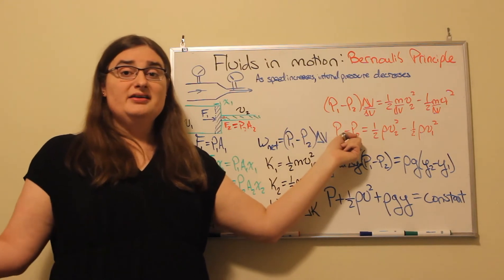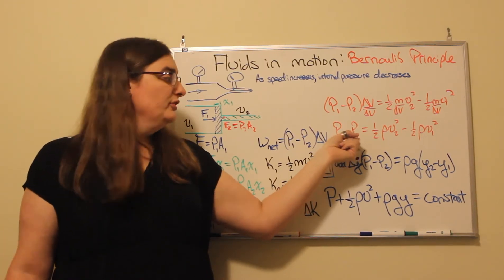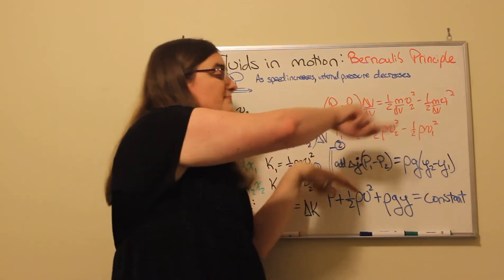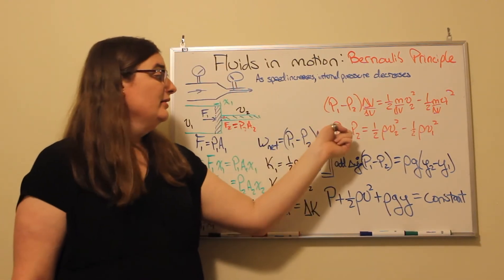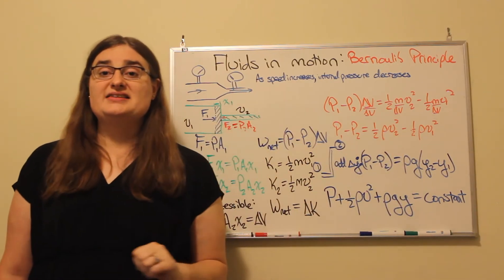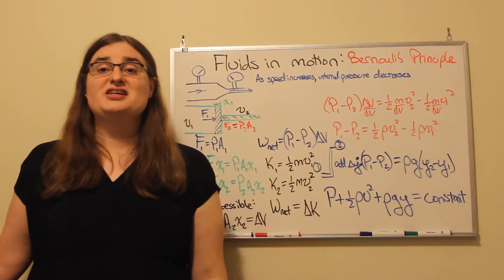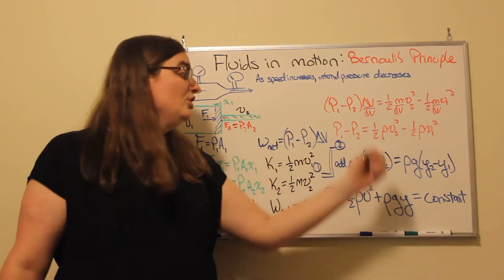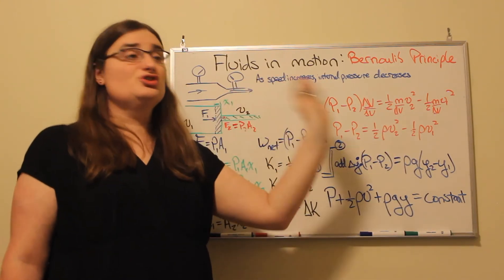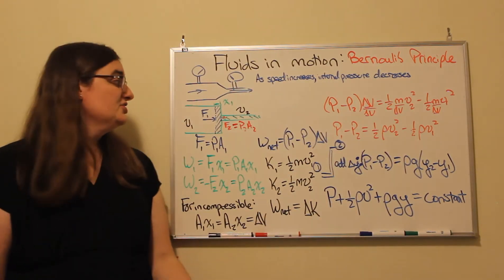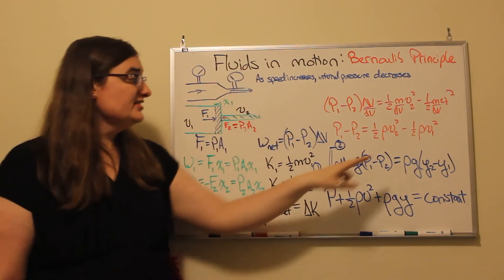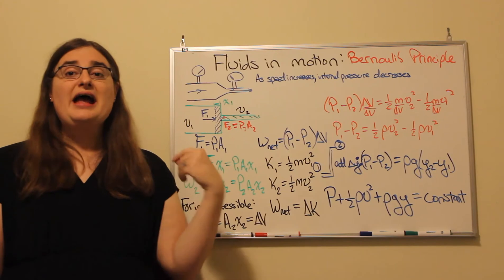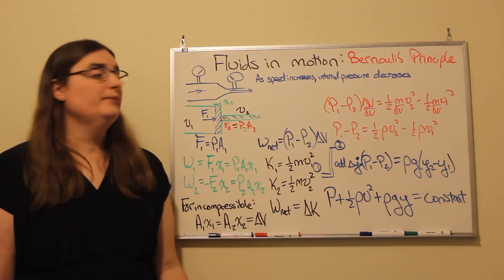Rearranging by moving negative terms to the other side, I get the pressure on side one plus the kinetic energy density on side one — one-half times the density times the speed on side one squared — equals the pressure on side two plus the kinetic energy density on side two — one-half times the density times the speed on side two squared. Back to Bernoulli's observation: as we go to a narrow area, speed increases. As speed increases, we have more kinetic energy per volume, so pressure has to decrease. It's just the work-energy theorem applied to fluids.